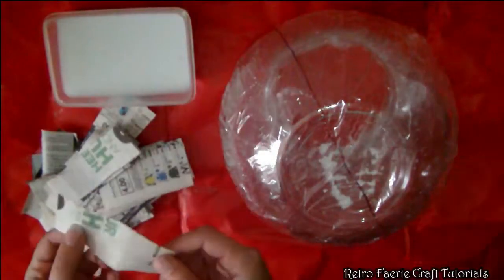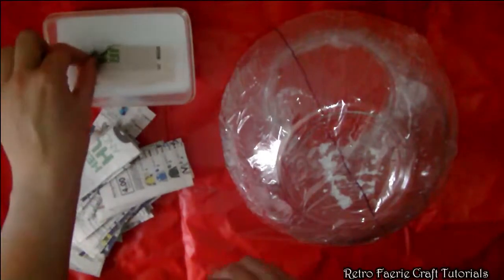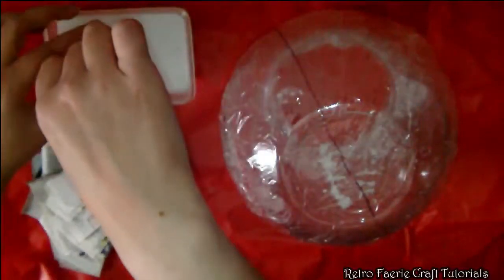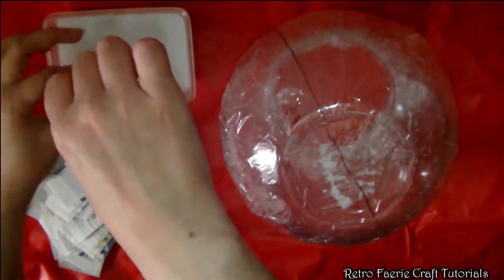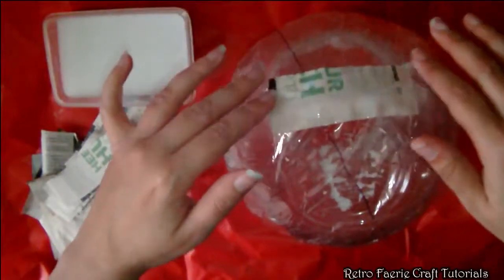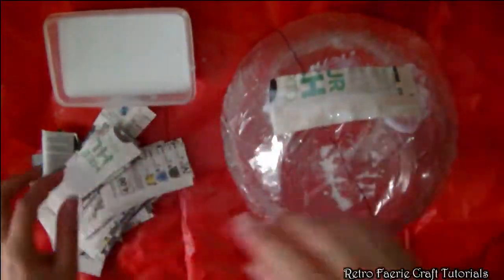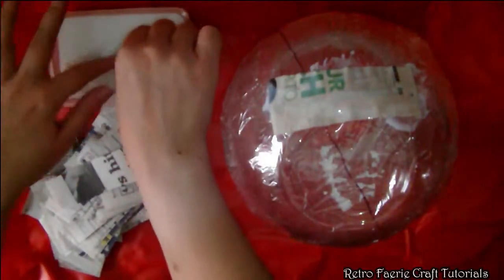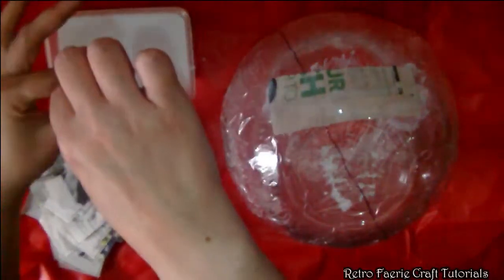This is just a plastic bowl that you've seen in another tutorial that I've actually just reused. I'm going to paper mache over this, so I've just cut up some newspaper and I'm going to use PVA glue mixed with water, two parts of glue to one part water, to cover this.